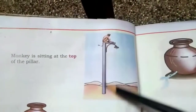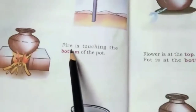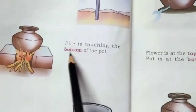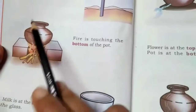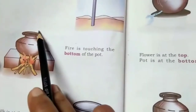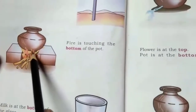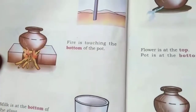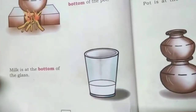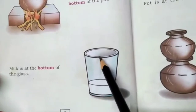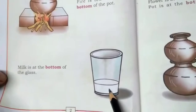Fire is touching the bottom of the pot. Where is the fire touching? At the bottom — not at the top. This is top and this is the bottom. Milk is at the bottom of the glass. Where is the milk — is it at the top or at the bottom? The milk is at the bottom of the glass.